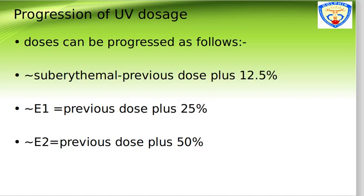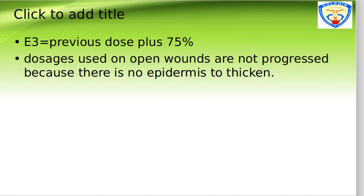For dose progression, the formula is: E1 dose = previous dose + 25%; E2 dose = previous dose + 50%; E3 dose = previous dose + 75%. Doses used on open wounds are not progressed because there is no epidermis to thicken, so care must be taken when treating open wounds.